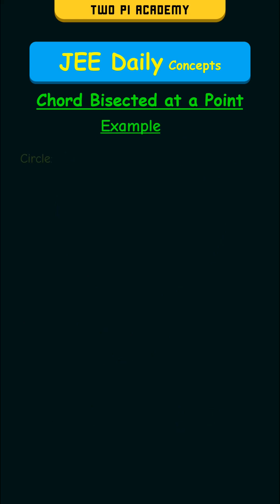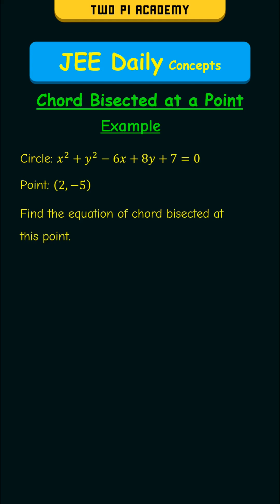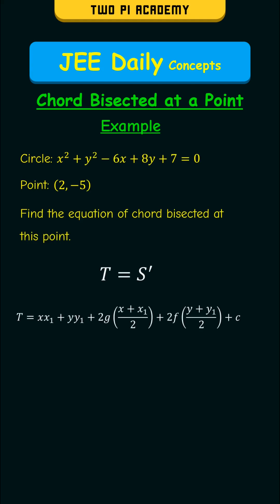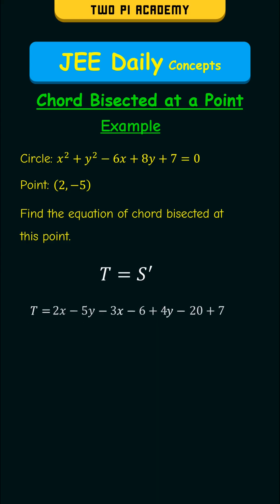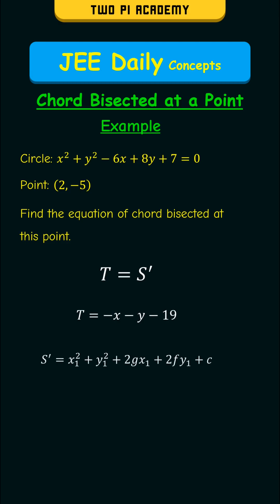For example, consider the following circle and the point (2, −5). Find the equation of the chord bisected at this point. We know that the equation is T = S'. Using the formula and simplifying, we get T as −x − y − 19.